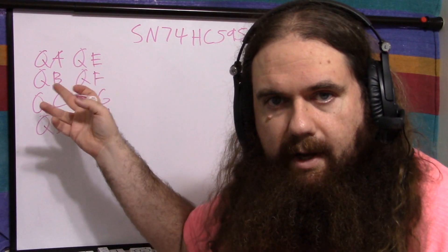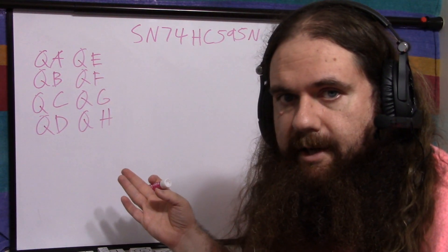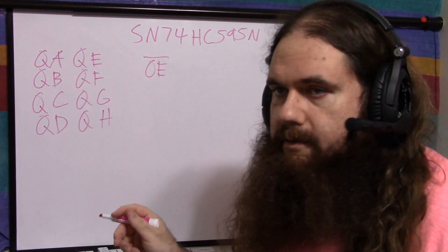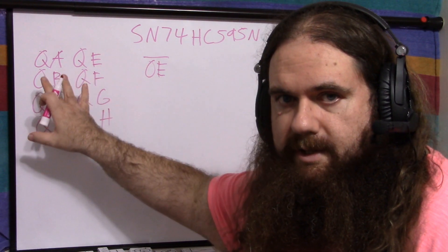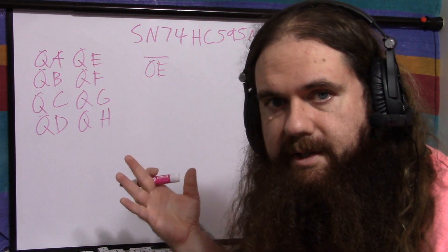It's got the eight outputs, QA through QH, A, B, C, D, E, F, G, H. These are tri-state outputs, so you've got the output enable, active low. So if output enable is low, these outputs are high or low. If output enable is high, then these outputs are high impedance, disconnected.